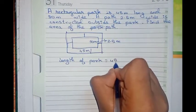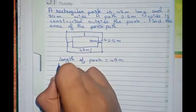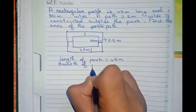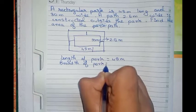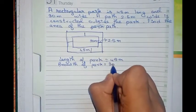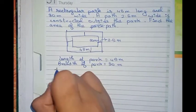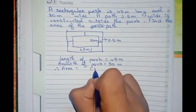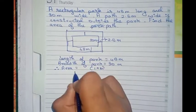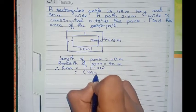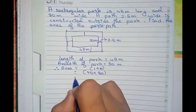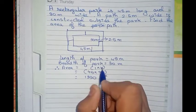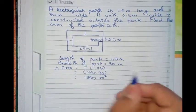The length of the park equals 45 meters and the breadth of the park equals 30 meters, as given. Now, therefore, we find the area. Area equals length into breadth, so equals 45 into 30, that is 1350 meter square. So this is the area of the inside portion.